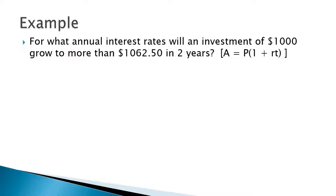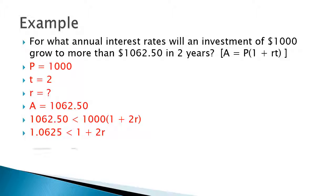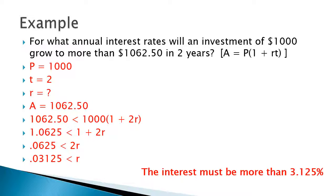For what annual interest rates will an investment of $1,000 grow to more than $1,062.50 in two years? We have the formula A equals P times (1 plus RT), where A is the amount at the end of the term, P is the principal, R is the rate as a percent, and T is time in years. Putting the given information into an inequality — we want it to be more than $1,062.50 — we divide by 1,000, subtract 1, and divide by 2. Remember that R is a rate, which is a percent: 3.125%. If the interest rate is more than 3.125%, then we will get the amount expected.